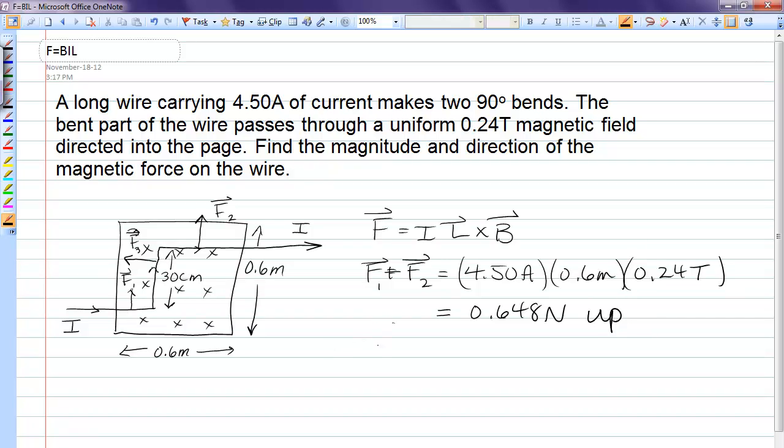The one to the left, F3, is equal to the same current, 4.5 amperes. The length of wire is 0.3 meters, and the field is the same, 0.24 tesla. And that comes out to 0.324 newtons left.